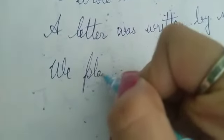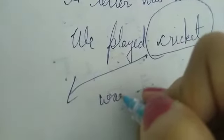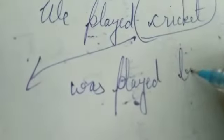We played cricket. Cricket. Cricket was played, V3. What is the third form of play? Play, played, played. All right. Cricket was played by us.